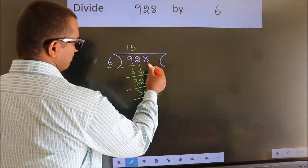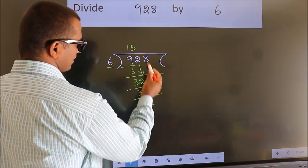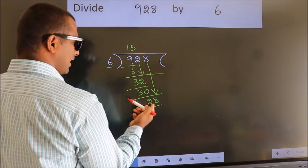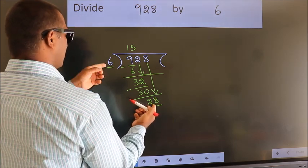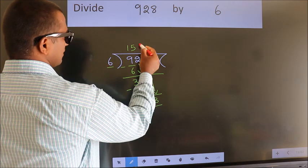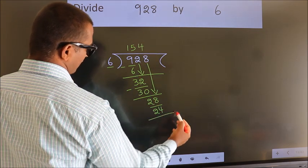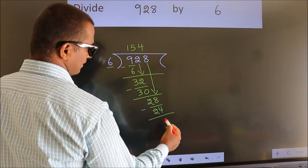After this, bring down the beside number. So, 8 down. So, 28. A number close to 28 in the 6 times table is 6 fours, 24. Now we subtract. We get 4.